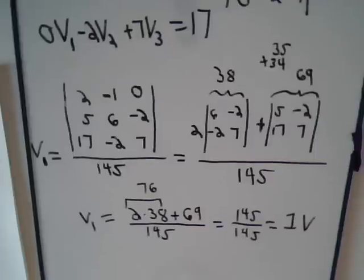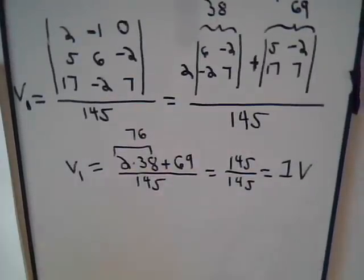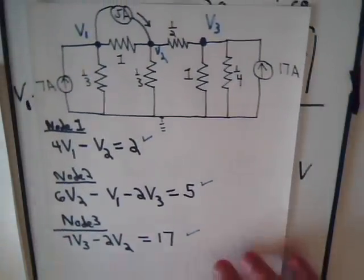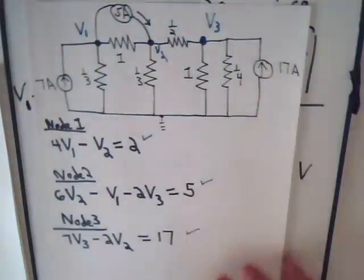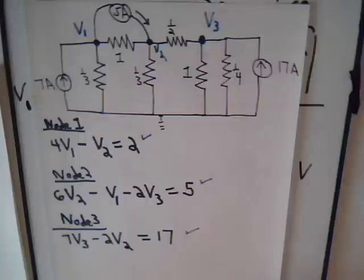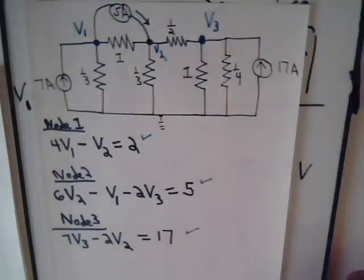Now let's look at our circuit — we know that this node is 1 volt. We've yet to determine V2 and V3; once we do, we can determine the current throughout the resistors. We won't have time to finish that in this video, so come back and join us in the next video to get that taken care of.